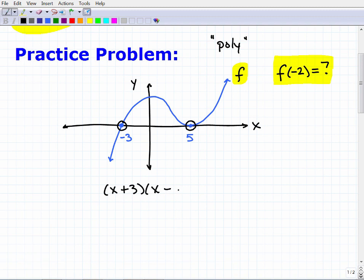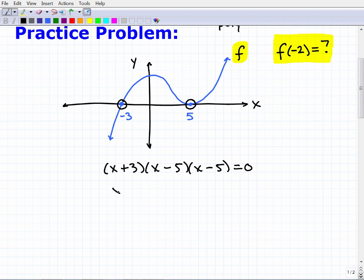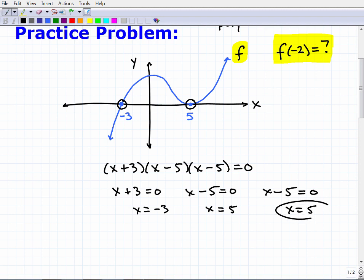We can write linear factors here: x plus 3 times x minus 5 times x minus 5, all equal to 0. If I set each one of these factors equal to 0, I can go x plus 3 equals 0 and x minus 5 equals 0. So here I get x equals negative 3, and here I get x equals 5. There's two of these, so x equals 5 again. I have a root here, a root there, and a root here—three solutions, two at 5.